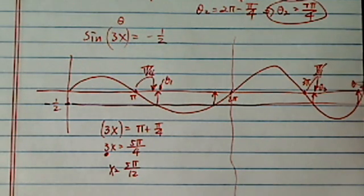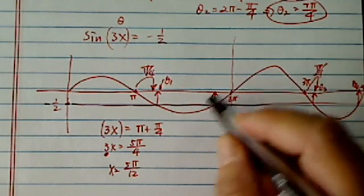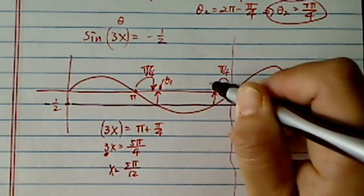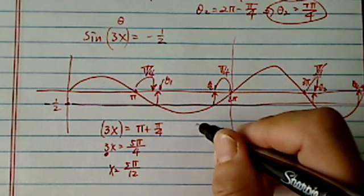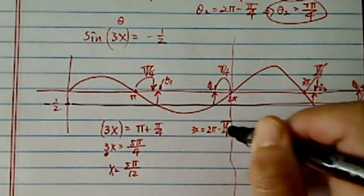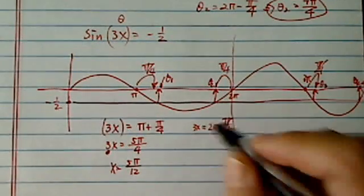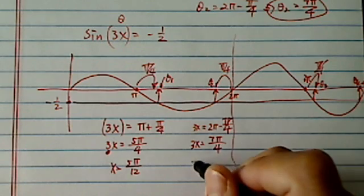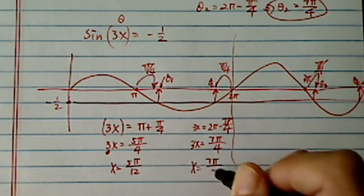So this is θ₃, and I do have a θ₄. Let's take a look at θ₂ here, which is π/6 inside. So 3x is equal to 2π minus π/6. This is my θ₂. So 3x is equal to 11π/6, x equal to 11π/18.